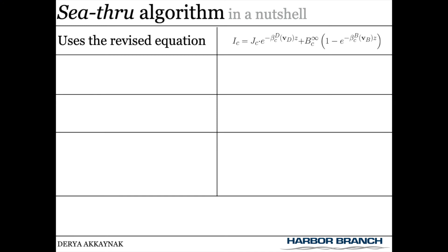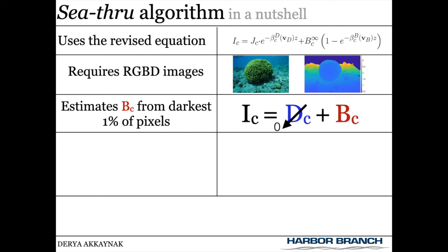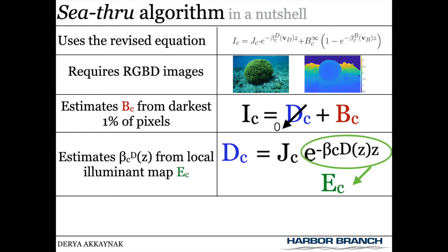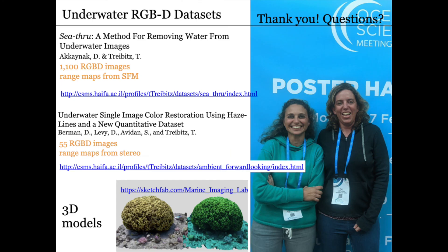See-Through is the first method to use the revised underwater image formation model. It takes range as input. It estimates backscatter using the darkest pixels in the image, similar to dark channel prior but not the same. First, it knows range — it doesn't have to compute it. Second, it takes pixels that are dark simultaneously in all three channels, rather than the darkest in any given channel. Then it computes an estimate of spatially varying illumination from which it calculates the attenuation coefficient. Finally, photo finishing is applied. Please have a look at the papers for details.